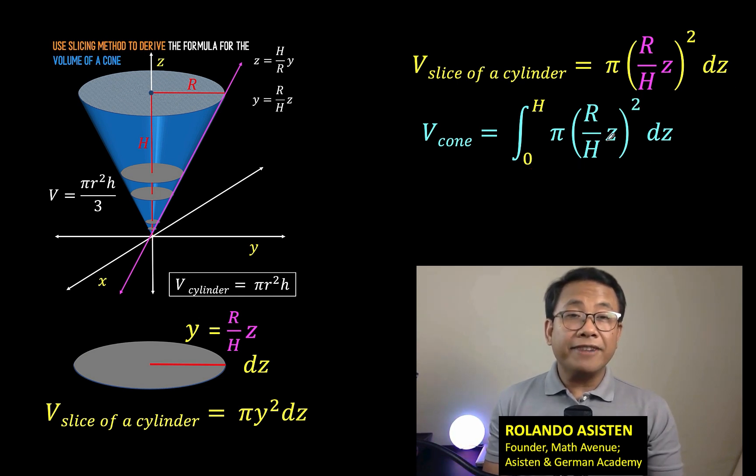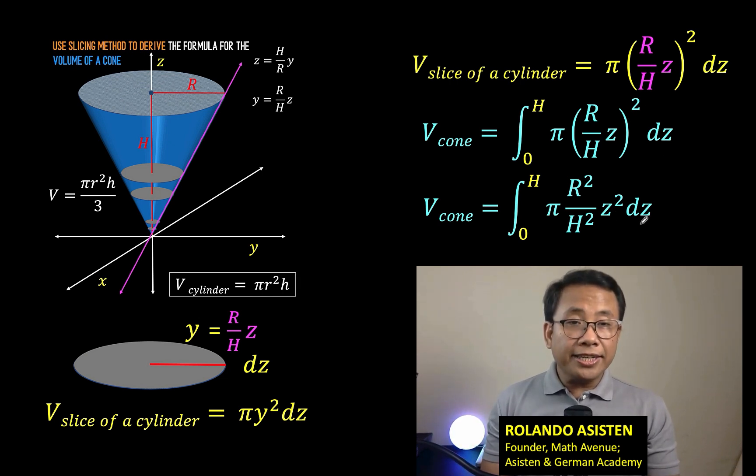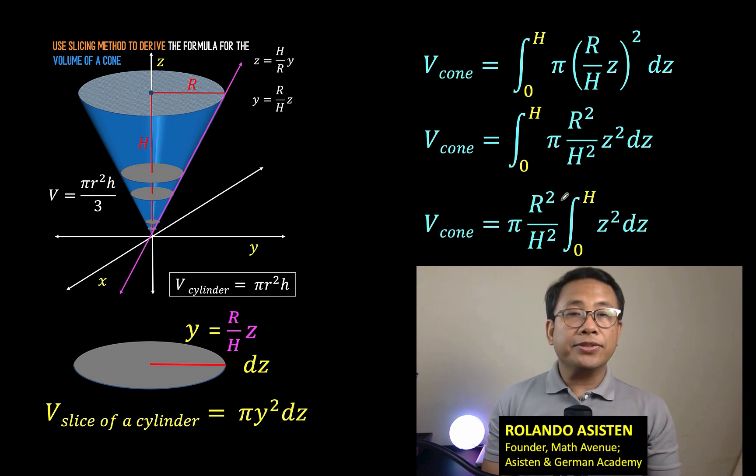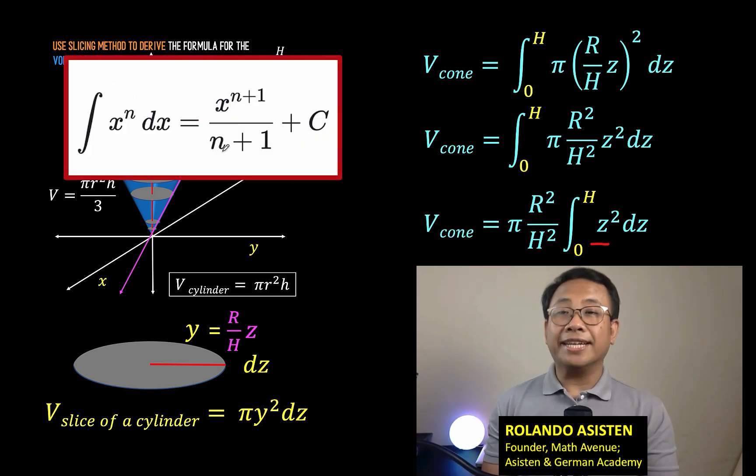So what we need to do now is solve this definite integration problem. Let's simplify this part to arrive at R² over H² times z² and copy all the rest. Our variable of integration is z, so z is a variable here. But this part here, π R² over H², this is just a constant. So we can pull this out of the integration symbol. The constant π R² over H² times the integral from 0 to H of z² dz. We need to find the antiderivative of z² dz, and we can use the power rule of antidifferentiation.